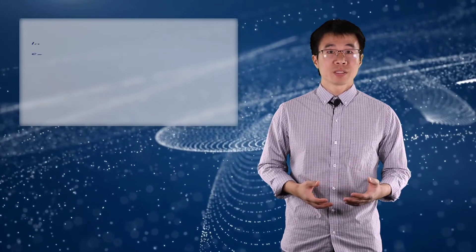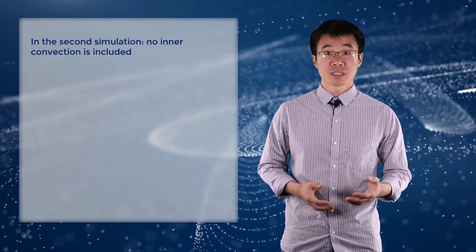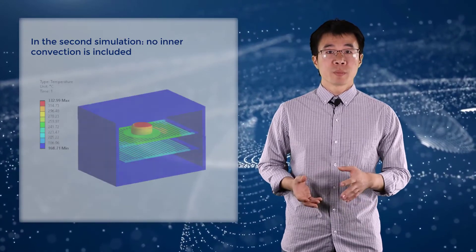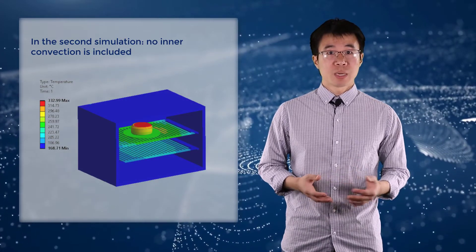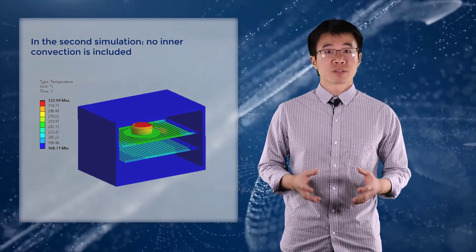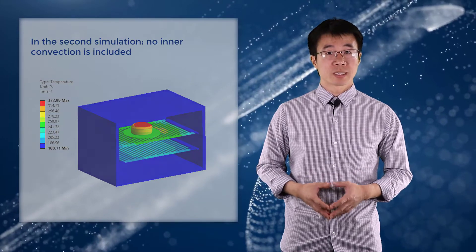Now let's do an experiment and remove the convection load on the inner surfaces and run the simulation again. Now we can see the dominance of radiation. The temperature on the top of the cake nearest to the heating coil is hot. The effects of the view factors can also be observed clearly.